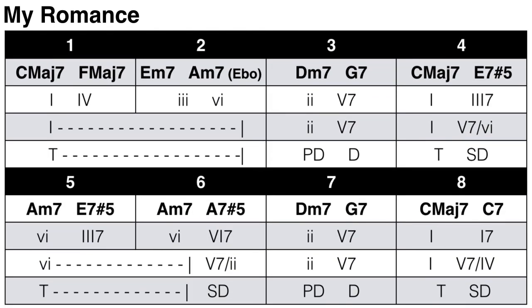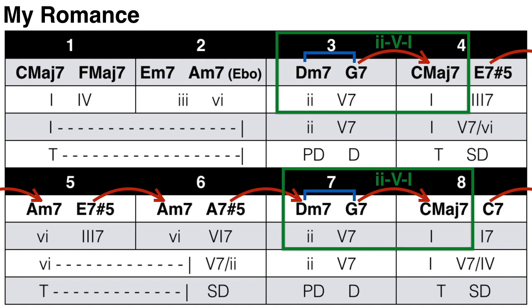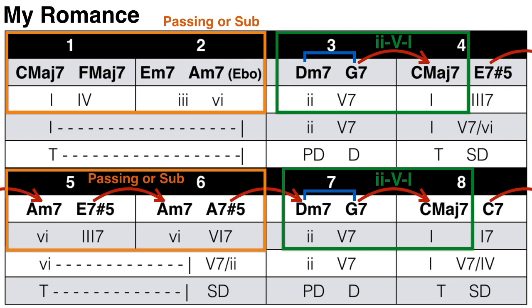Looking at section A of 'My Romance,' I first label all the 2-5 movements with brackets and the 5-1 movements with arrows, then find all the 2-5-1 progressions. Everything before those is tonic prolongation. We see that bars 1 and 2 are just tonic prolongation of the C major 7 chord: the F major 7 is a quick passing chord, the E minor 7 and A minor 7 are substitutes of C major 7, and the E-flat diminished is also a passing chord. Then in bars 3 and 4 we just have a 2-5-1 in C — predominant, dominant, tonic. All in the key of C major.